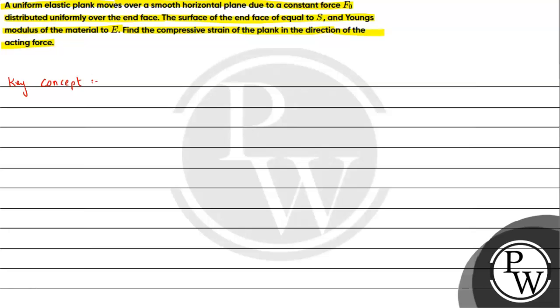So strain is basically a dimensionless, unitless quantity. Strain is defined as change in dimension upon original dimension. So here is the definition of that.